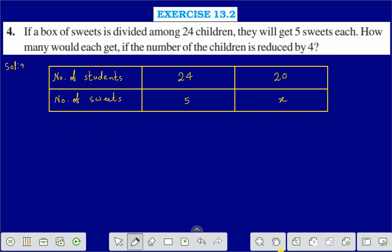That means when the number of students will decrease, the number of sweets will be more. That means they are in inverse proportion.